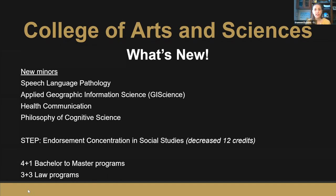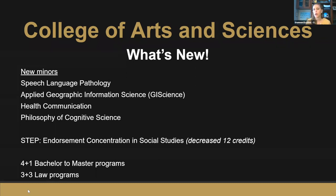We've also made changes to existing degrees. Our social studies endorsement for secondary ed — history major with a social studies concentration — is decreasing by 12 credits starting in the fall. We found three courses no longer needed based on state certification direction, making us more competitive in the market for that social studies endorsement. Also, the linguistics major has decreased its foreign language requirement from two years down to one.